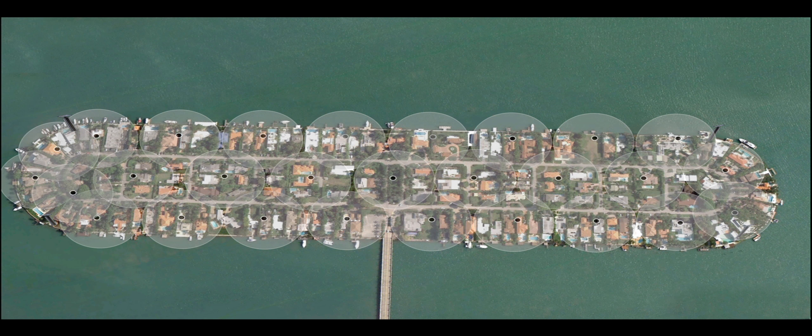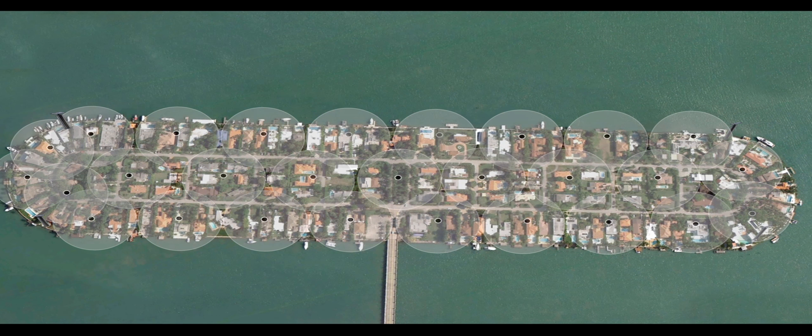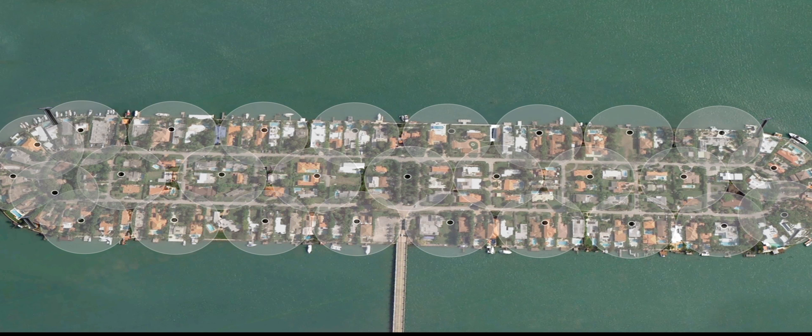The circles represent the radio range of each cell site when communicating with RFID tags. For optimum coverage, the coverage circles need to be overlapping, like in this system.